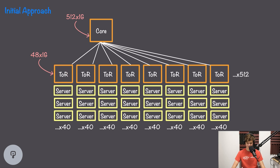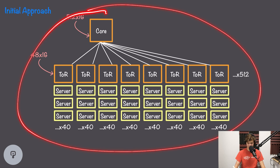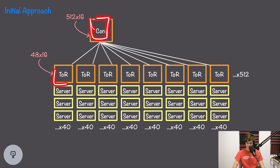In order for racks to communicate between other racks, we need to introduce another layer of switching. We're going to assume that this is all a single Layer 2 network, so the core switch and the top-of-rack switch only have to worry about Ethernet frames. The switch's job is to take incoming traffic and figure out, based on the destination MAC address, which port the data should come out of.